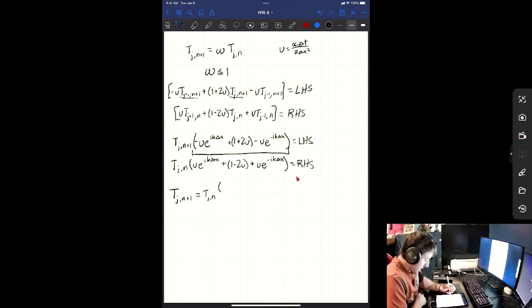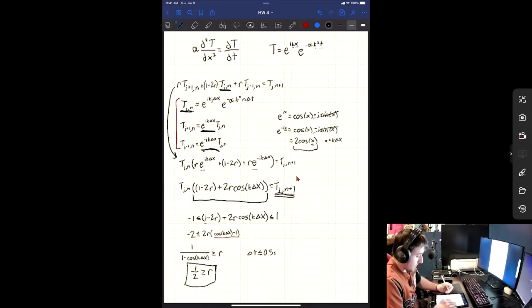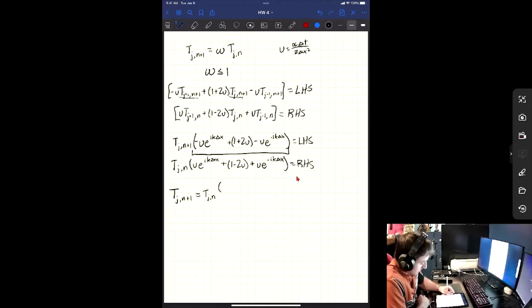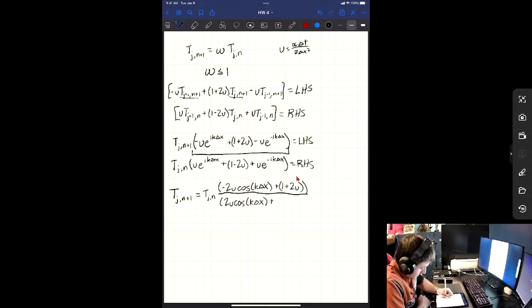And then we're going to have, so remember how we have this e to the i k delta x, and then e to the negative i k delta x. Remember when you add those together, it gives us this 2 cosine of our k delta x. But we can't forget our u's. So we have negative 2u cosine of k delta x. And then this is plus 1 plus 2u.